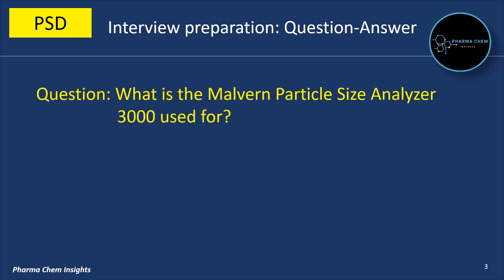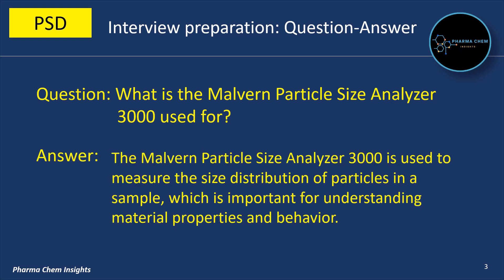Next question: what is the Malvern Particle Size Analyzer 3000 used for? The Malvern Particle Size Analyzer 3000 is used to measure the size distribution of particles in a sample, which is important for understanding material properties and behavior.